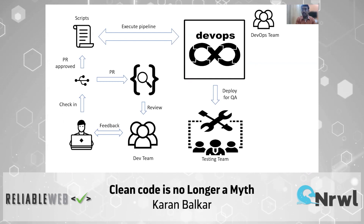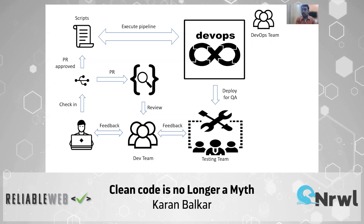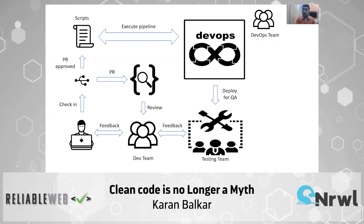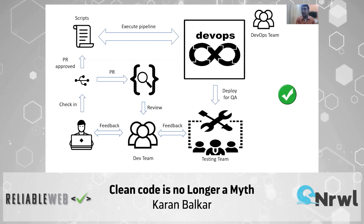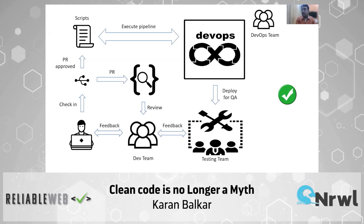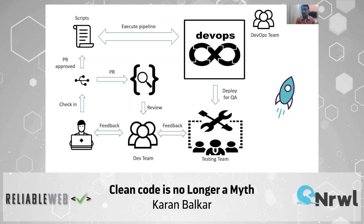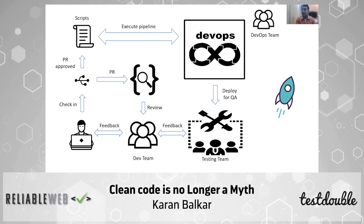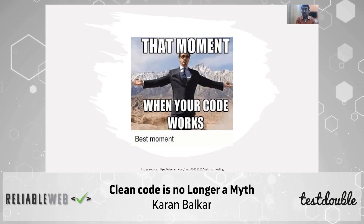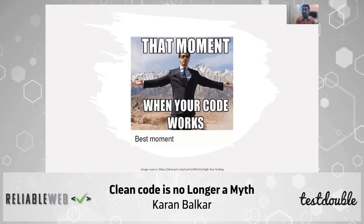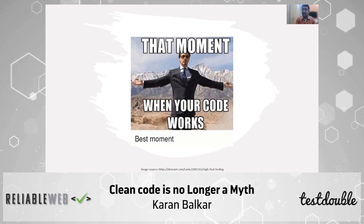The testing team comes into picture and is involved in testing the app against various scenarios, providing feedback on a continuous basis. Assuming all issues have been fixed with no potential bottlenecks, the testing team gives a green signal and the application finally goes live — goes into production. As software developers, we've all experienced this moment where our code is finally working and it feels like we've reached the pinnacle of success. However, if you're one of those developers who loves writing clean code, this really isn't the icing on the cake.